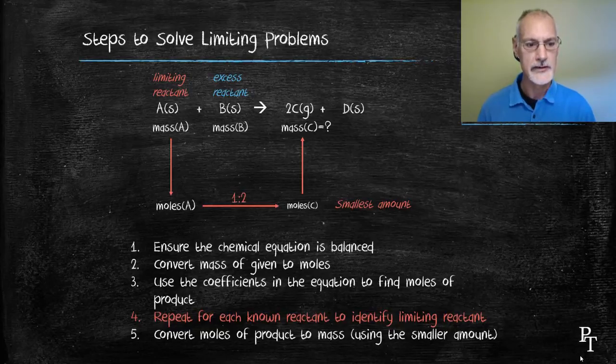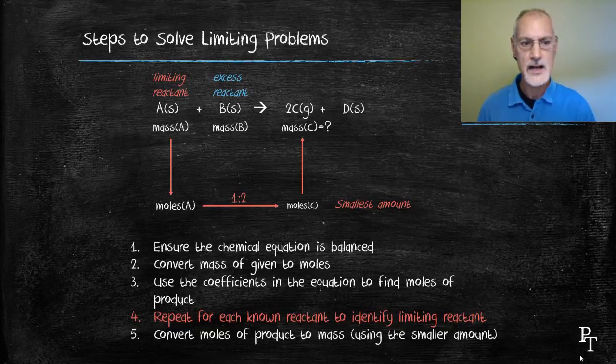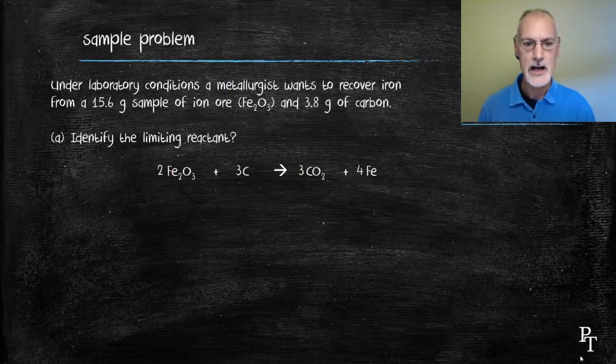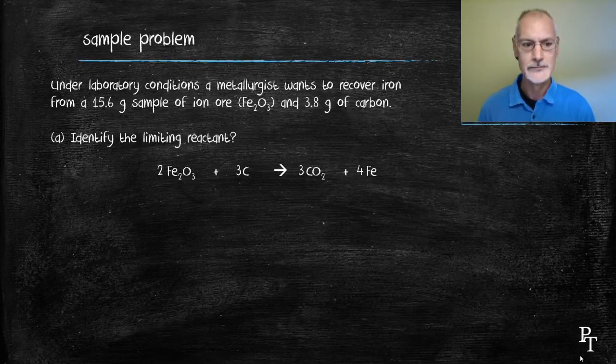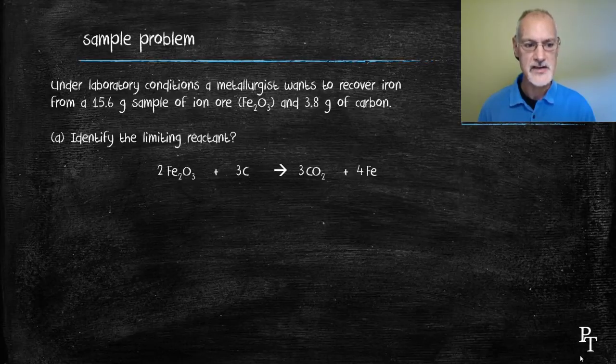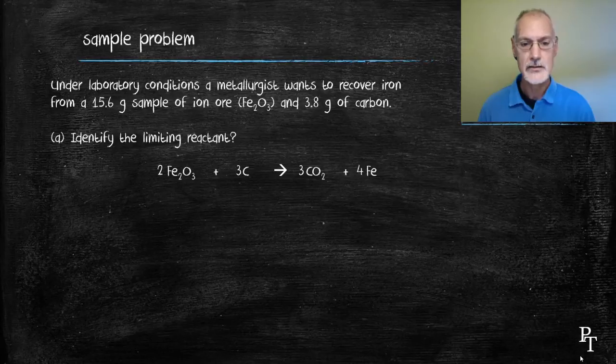So let's put this in a chemical example. Under laboratory conditions, I want to recover iron from iron oxide and I have 15.6 grams of the iron oxide and 3.6 grams of carbon all mixed together. The chemical equation you see here below. And I want to identify which of these is my limiting reactant, the iron oxide or the carbon.